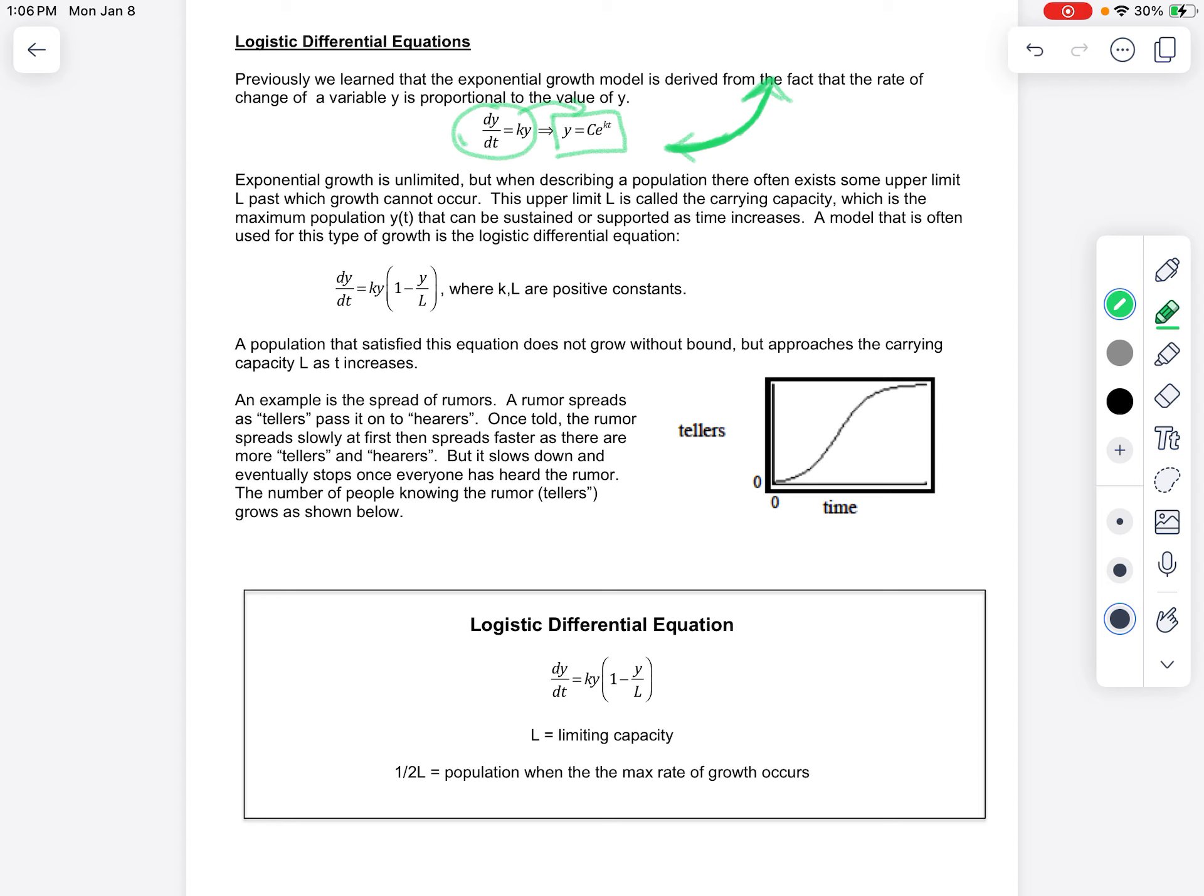Most things in life do not actually, or in nature, do not follow an exponential growth model. It follows what's called the logistic differential growth model. And the idea is that you can have things that start out growing exponentially, but then over time in the long run, it's eventually going to level off. And the idea is because there's a limited number of resources, supplies, land, water, whatever it may be.